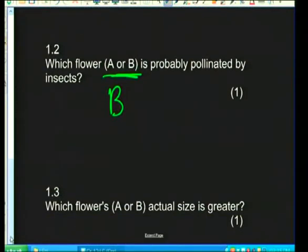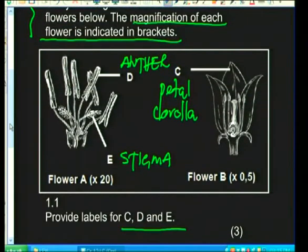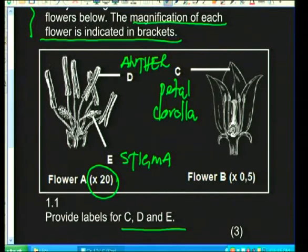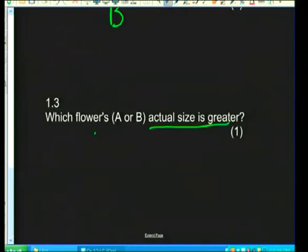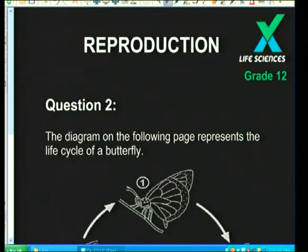The next question asks which flower, A or B, has a greater actual size. On face value, B looks bigger. But flower A is magnified 20 times whereas flower B is only magnified 0.5 times. Since A is magnified 40 times more than B, the actual size of B is greater.